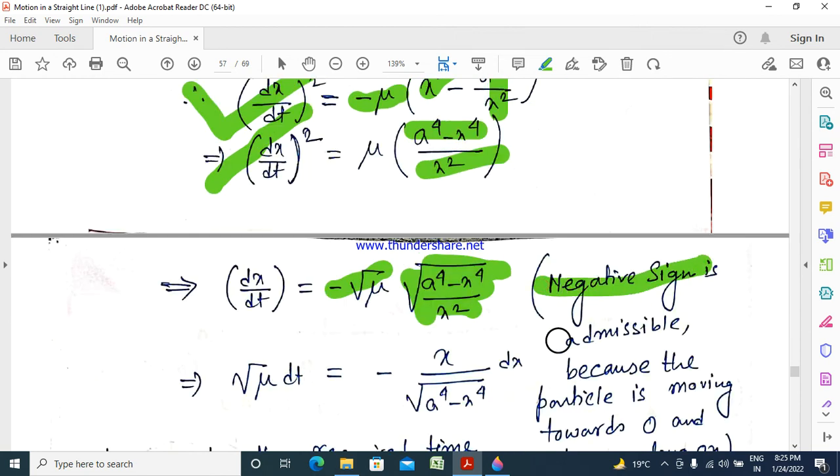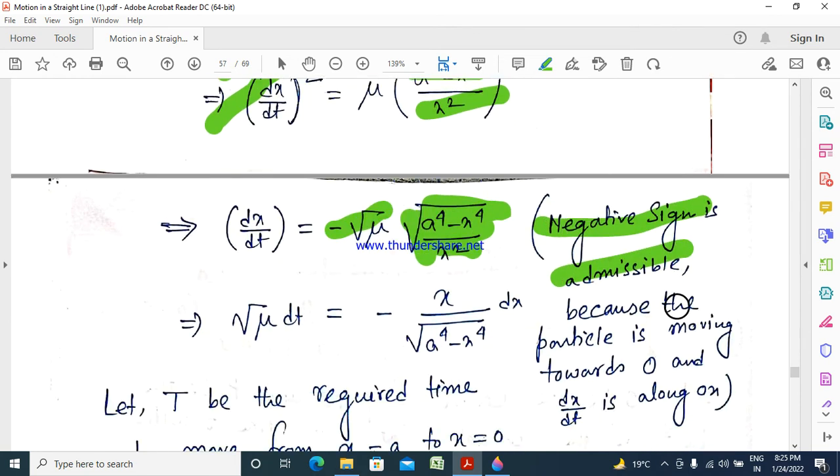Here the negative sign is admissible because the particle is moving towards O and dx dt is always along negative x direction, that is away from O.